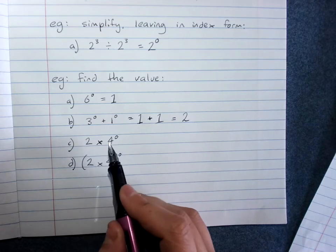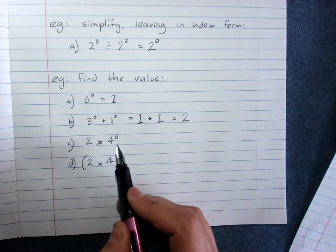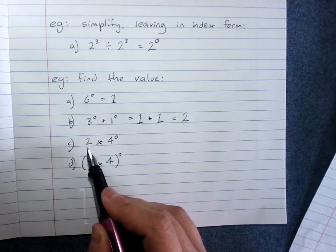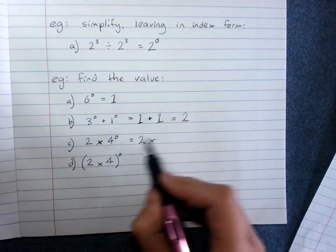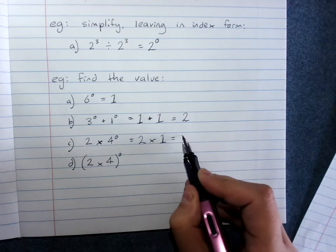Here I've got 2 times 4 to the power of 0. Remember we do powers before we do times in order of operations. So this is 2 times 4 to the power of 0 is 1, I've got 2.